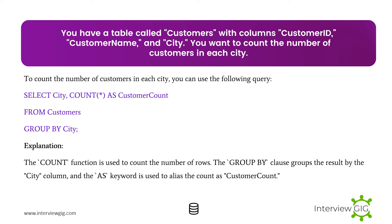Next Scenario: You have a table called Customers with columns Customer ID, Customer Name, and City. You want to count the number of customers in each city. To do this, you can use the following query. The COUNT function is used to count the number of rows. The GROUP BY clause groups the result by the City column, and the AS keyword is used to alias the count as Customer Count.